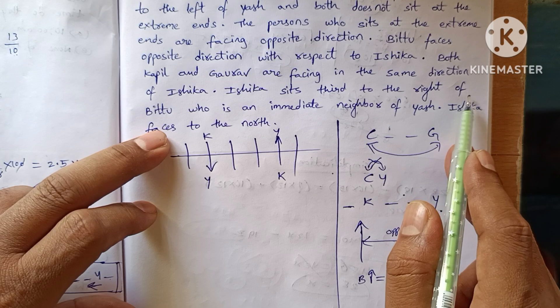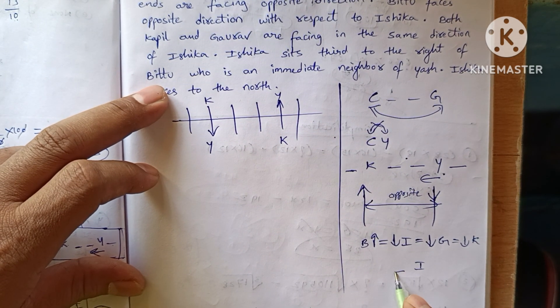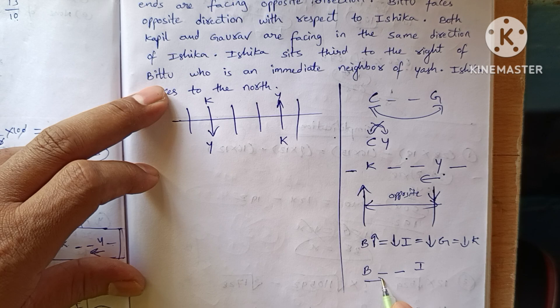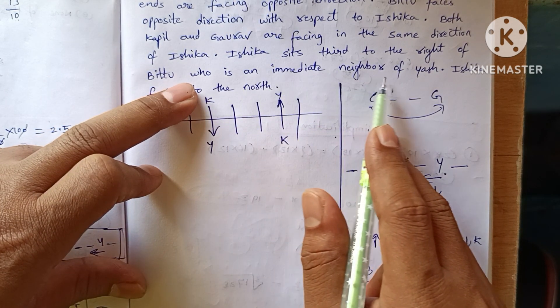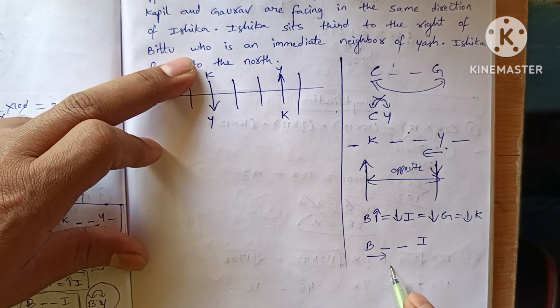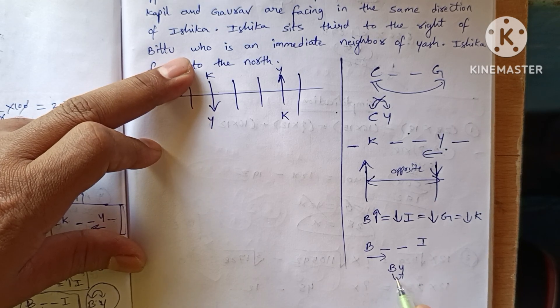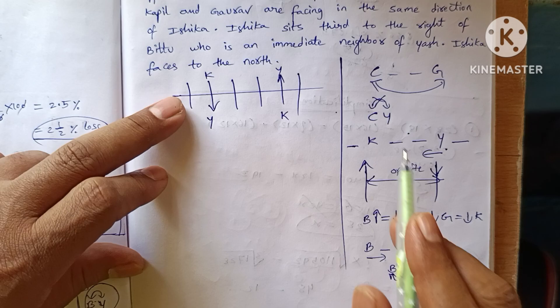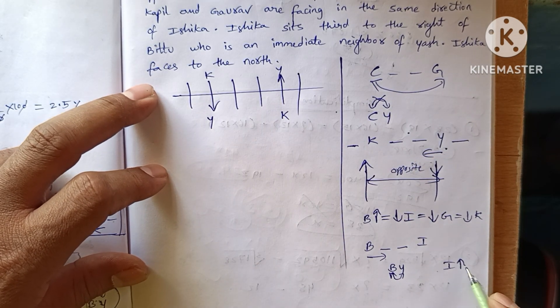Ishika sits third to the right of B2. Ishika sits third to the right of B2. B2 who is an immediate neighbor of Esh. B2 is an immediate neighbor of Esh. Ishika faces north.